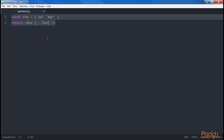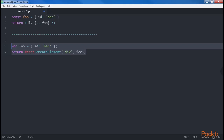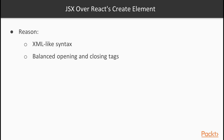Further, we proceed with JavaScript templating. One of the advantages of moving templates inside our components is that we can use the full power of JavaScript. The spread attribute is an example of that, and another common example is that JavaScript expressions can be used as attribute values by enclosing them within curly braces. The first pattern is multi-line. One of the main reasons we should prefer JSX over React's createElement is because of its XML-like syntax, and because balanced opening and closing tags are perfect to represent a tree of nodes.